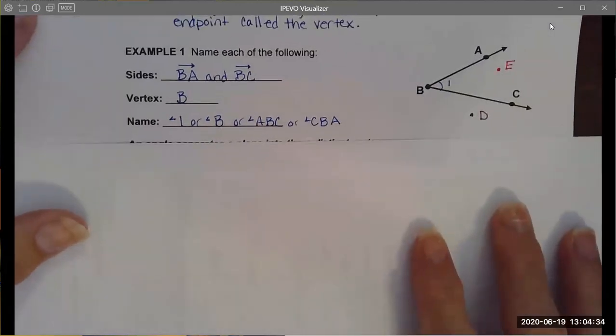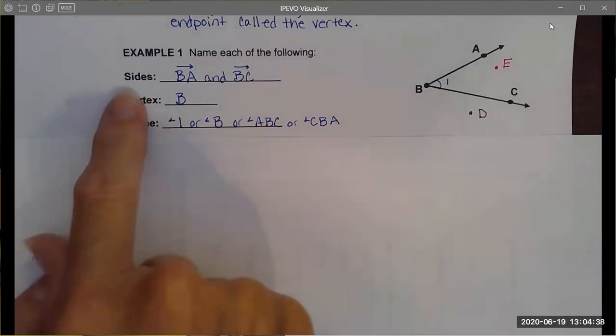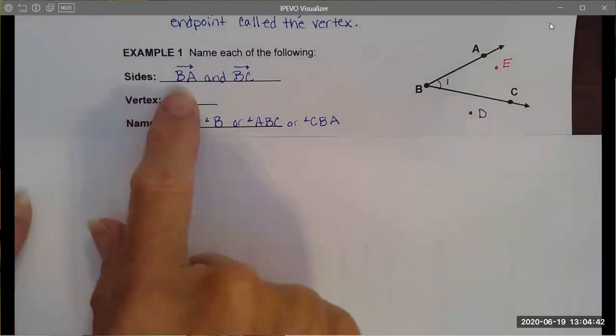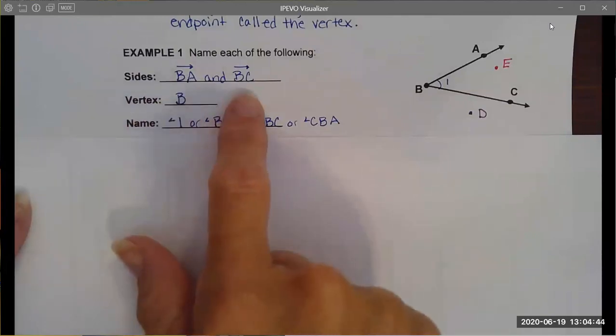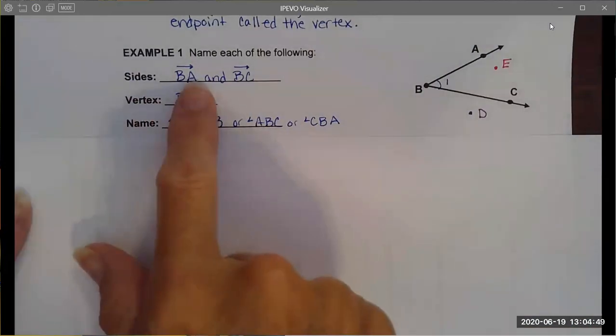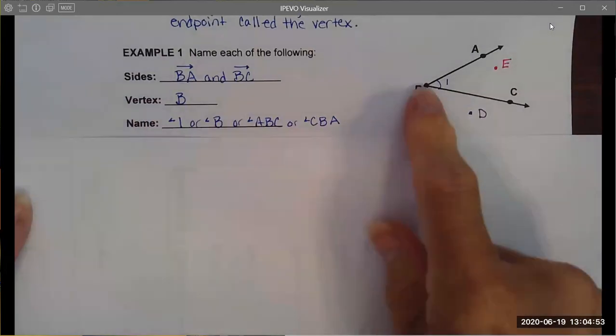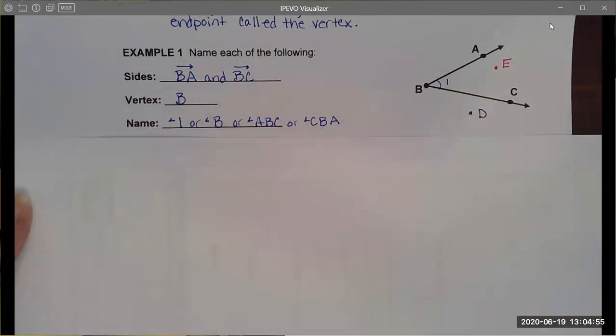There's some nomenclature that you may or may not have covered in previous years. The rays form the sides of the angle and we could label them ray BA and ray BC, always starting with the endpoint and the arrow is always over the point that extends towards infinity.